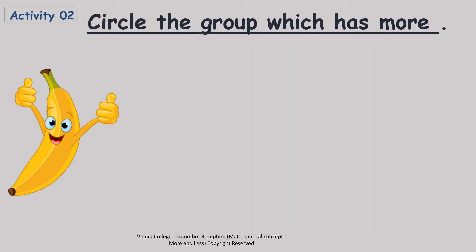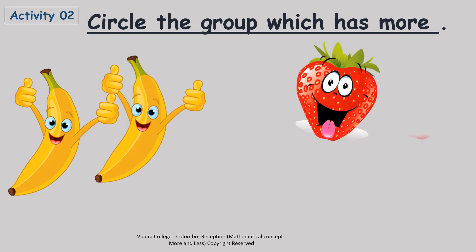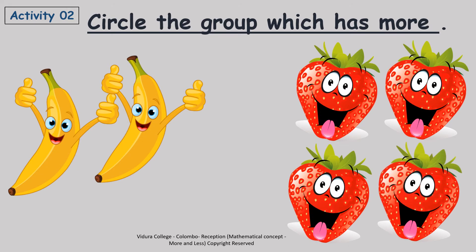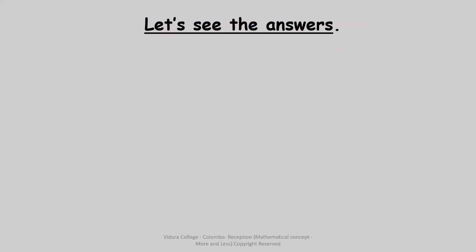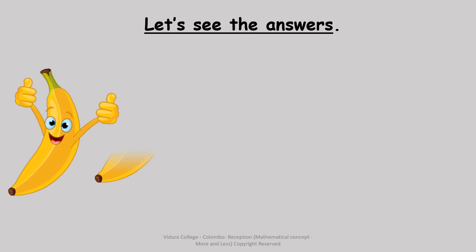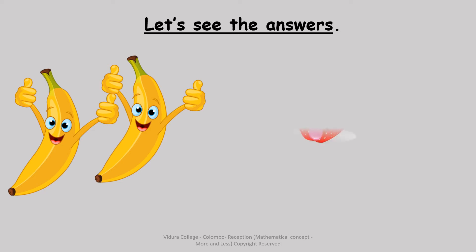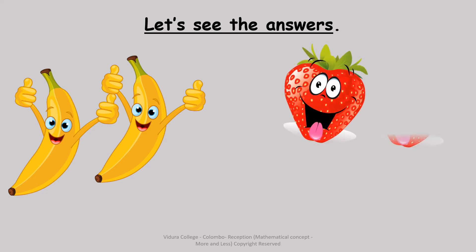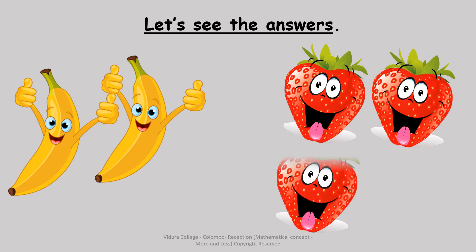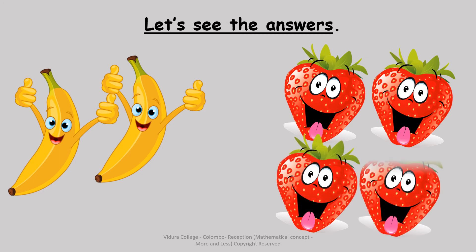Activity number 2: Circle the group which has more. Let's see the answers. Let's count how many bananas are here: 1, 2 — 2 bananas. Now let's count the strawberries: 1, 2, 3, 4 — 4 strawberries.